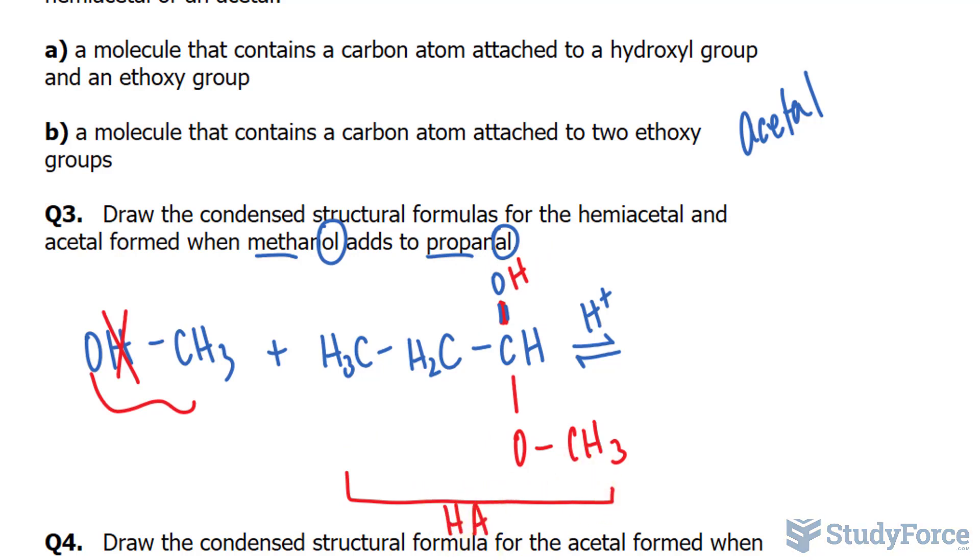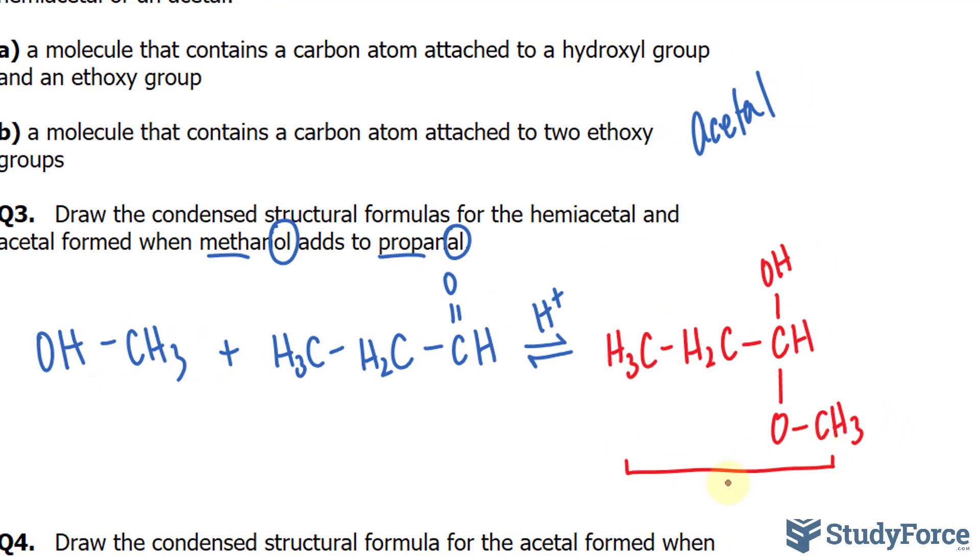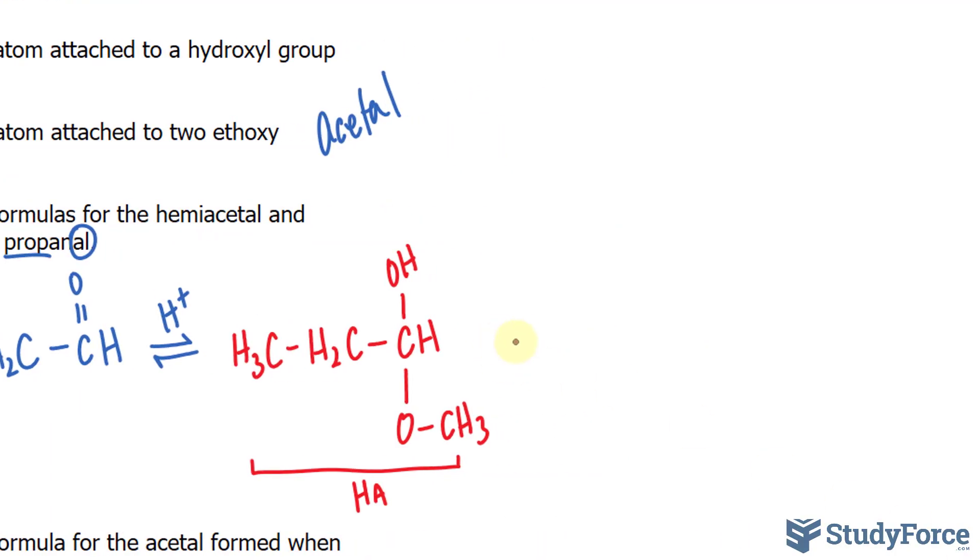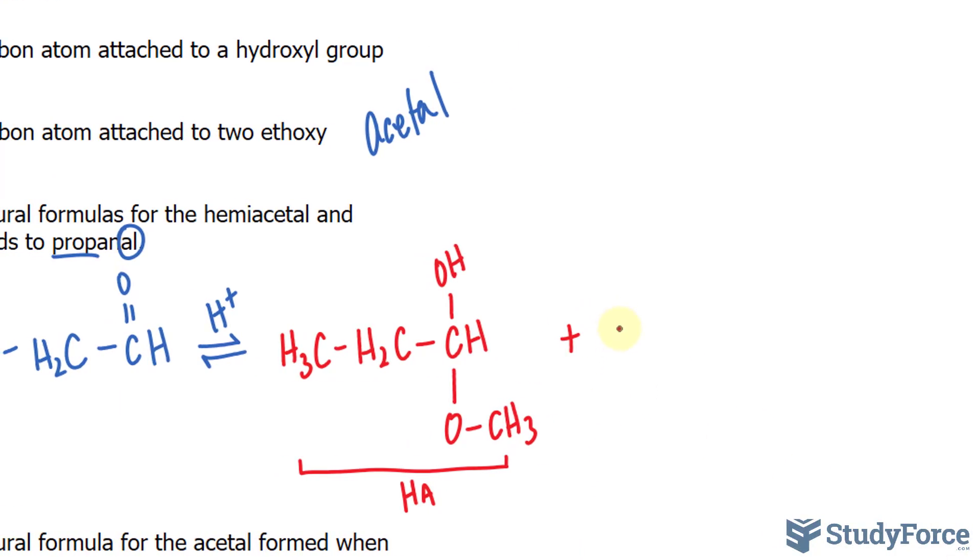To form the acetal, a second methyl is added to this mix. Notice that I've rewritten the molecule here, just so that we can show the progression. Now, as I mentioned, a second methanol is added, CH3OH. This is to form the acetal. And the acetal forms when the second molecule of methanol adds to the OH...